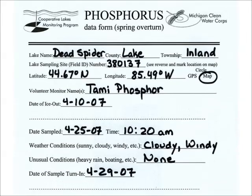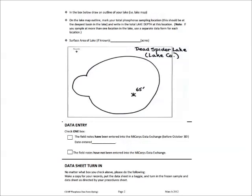Be sure to completely fill out your data form. Use a black permanent marker or a pencil. On the back of the data form, draw an outline of the lake and indicate the monitoring station and maximum depth. On the bottom, there are boxes to indicate whether you entered the phosphorus sampling information into the CLMP online database or if that information was not entered. Please check the appropriate box. No matter which box you check, put your filled-out data sheet into a baggie and place it into the larger bag with your frozen samples prior to turning in your sample.